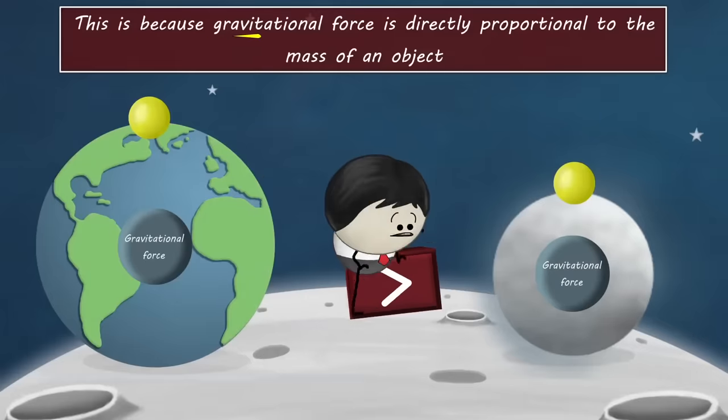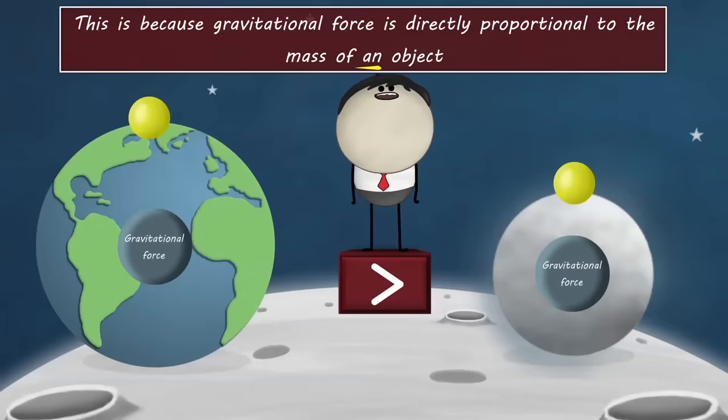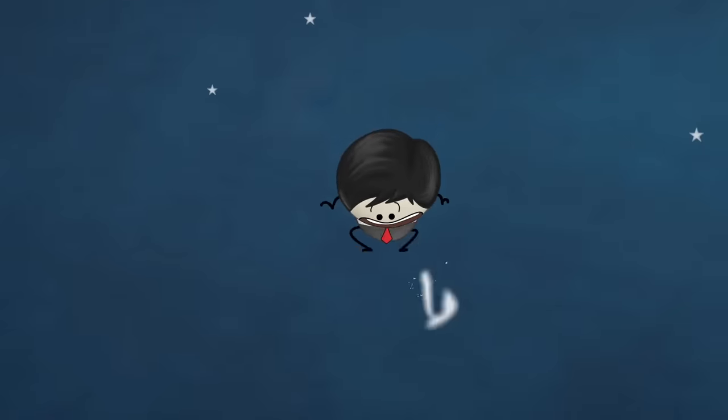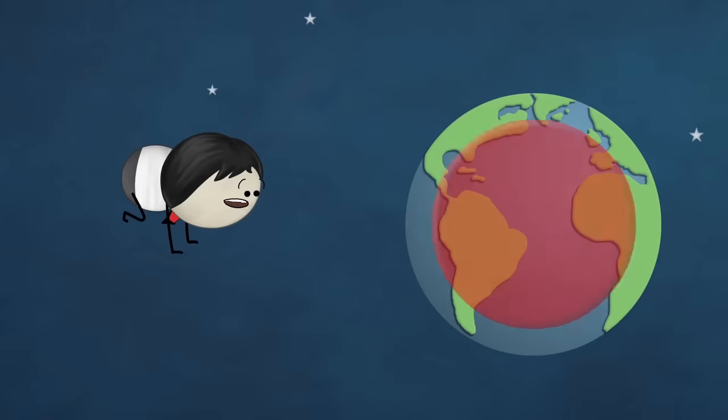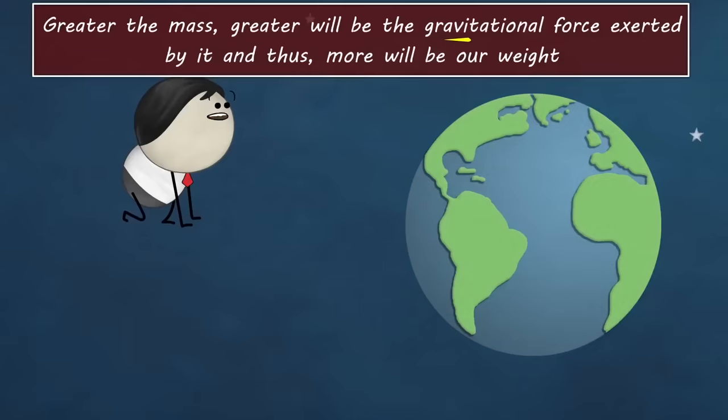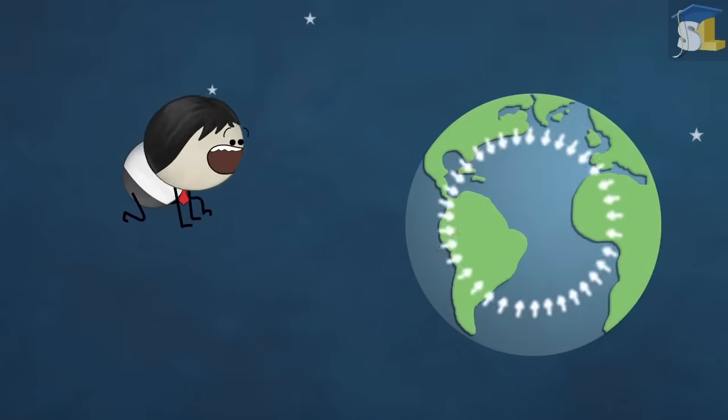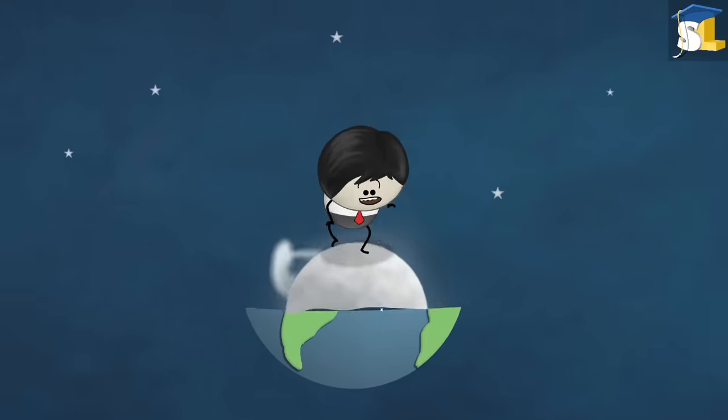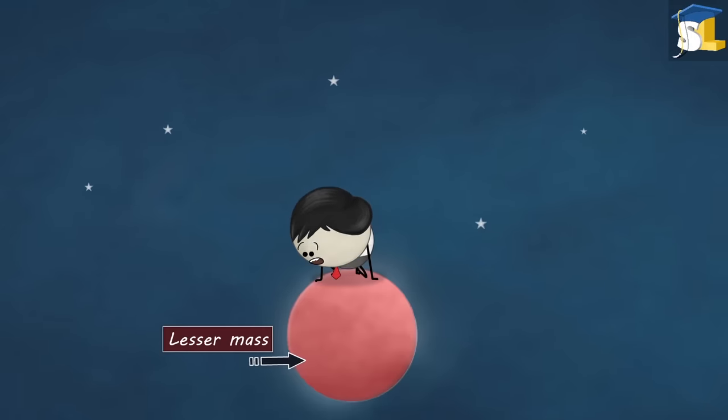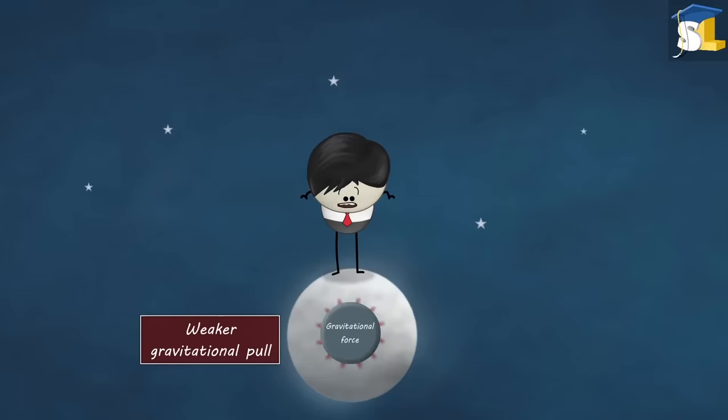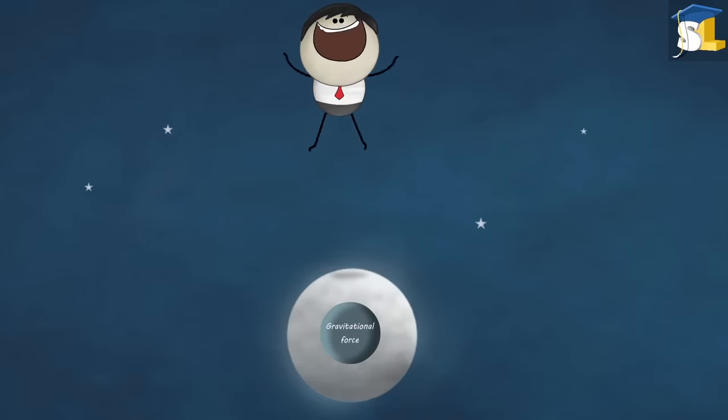This is because gravitational force is directly proportional to the mass of an object. Greater the mass, greater will be the gravitational force exerted by it and thus, more will be our weight. As the moon has lesser mass than the Earth, it has a weaker gravitational pull and hence, we weigh less on the moon.